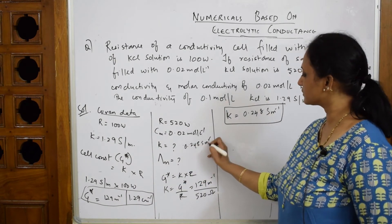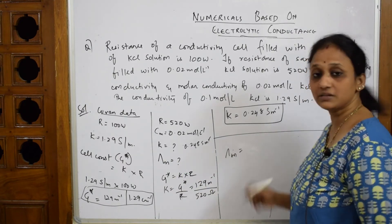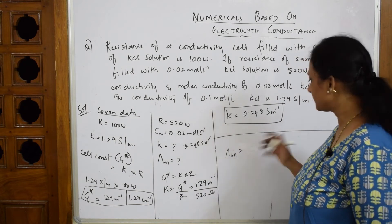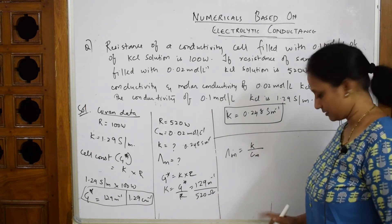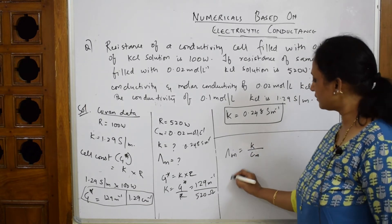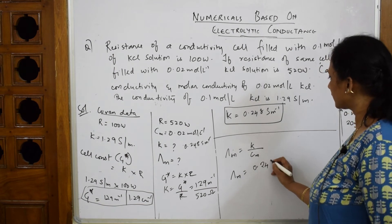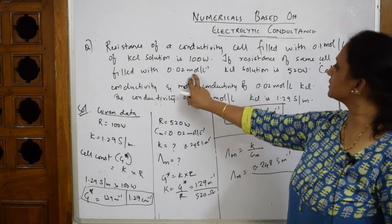For molar conductivity, the formula is Λₘ = 1000 × κ/Cₘ. In this case, K = 0.248 S/m.